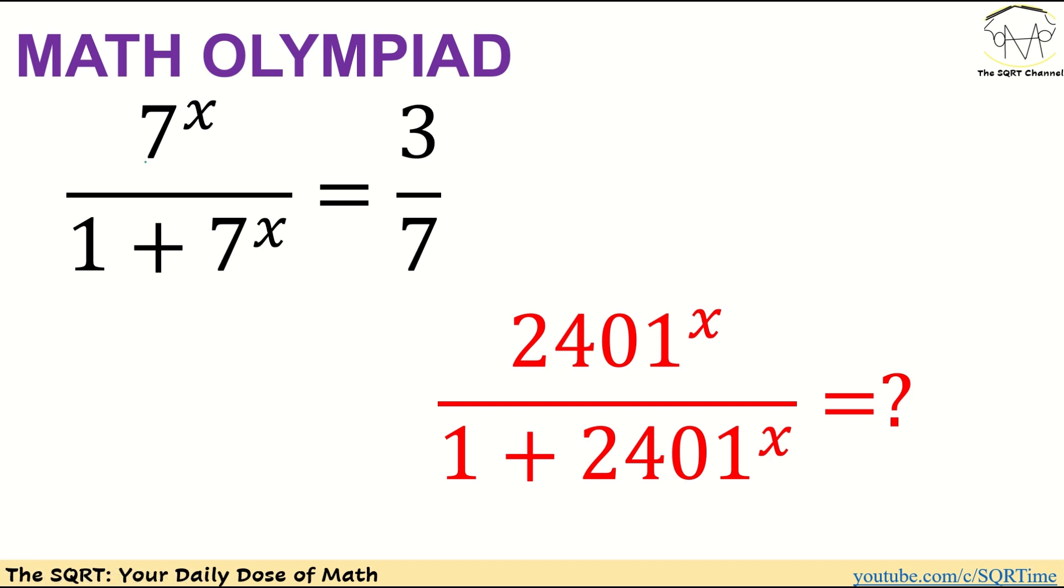Here we have 7 to the power of x over 1 plus 7 to the power of x given as 3 over 7, and we are going to find 2401 to the power of x over 1 plus 2401 to the power of x. Let's see how we are going to evaluate this.